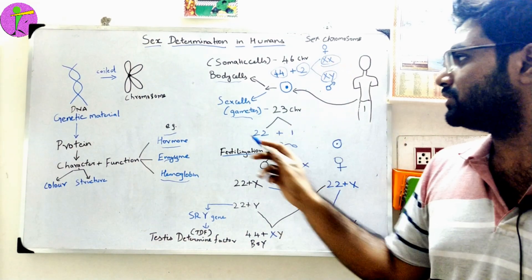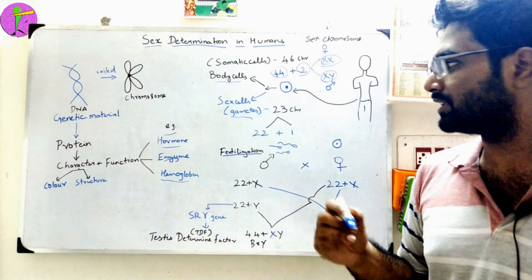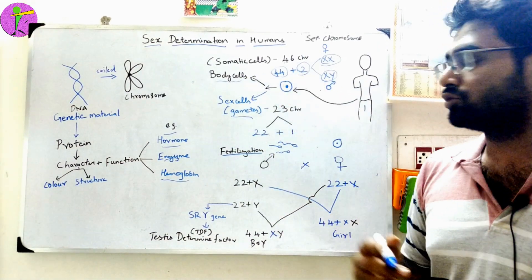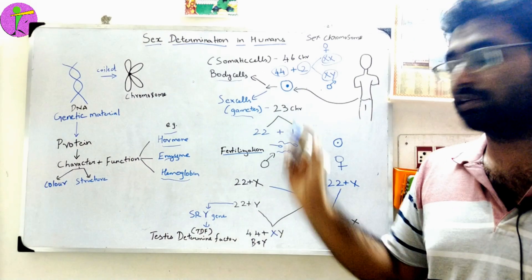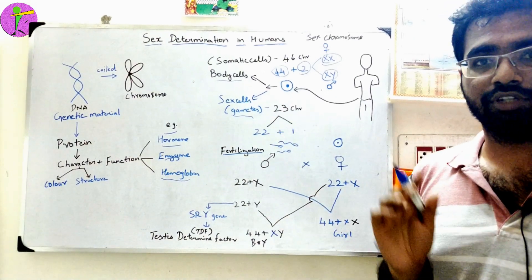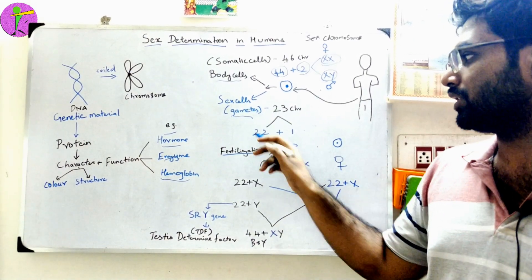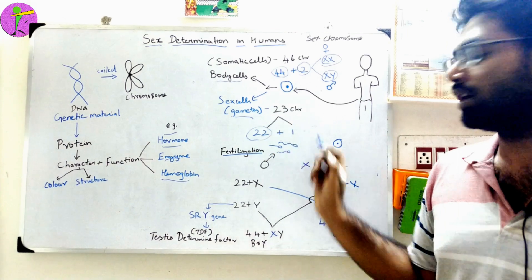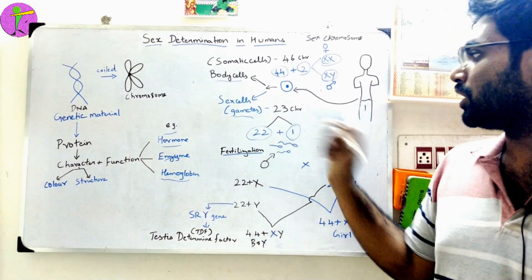The next type is gametes — sex cells. For gametes, there are 23 chromosomes. That is 22 autosomes plus one sex chromosome.